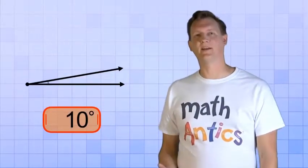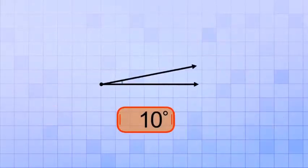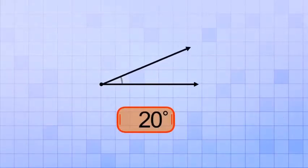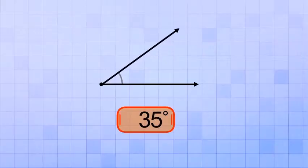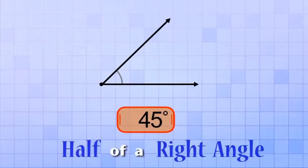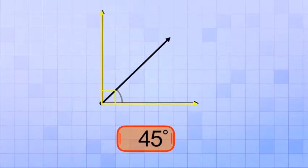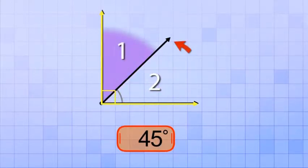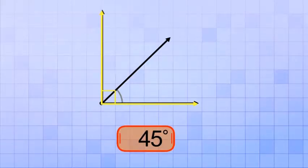So let's keep going, but a little bit faster this time. Alright, that's 15 degrees, 20, 25, 30, 35, 40, and 45. Now 45 degrees is a special angle because it's exactly half of a right angle. If we draw a right angle in the same spot, you can see that our ray cuts it into two equal parts. So, if 45 degrees is half of a right angle, can you guess how many degrees a right angle is?